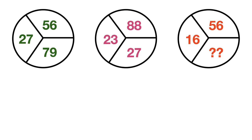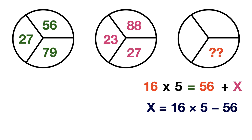So apply the same logic in the third circle. We have the left number and we are supposed to find the missing number on the right side. Here the equation becomes 16 times 5 equals 56 plus x, where x is the missing number. Solving for x, x becomes 16 times 5 minus 56 which equals 80 minus 56 which is equal to 24. So thus the value of x is 24. So 24 is the missing number in the third circle.